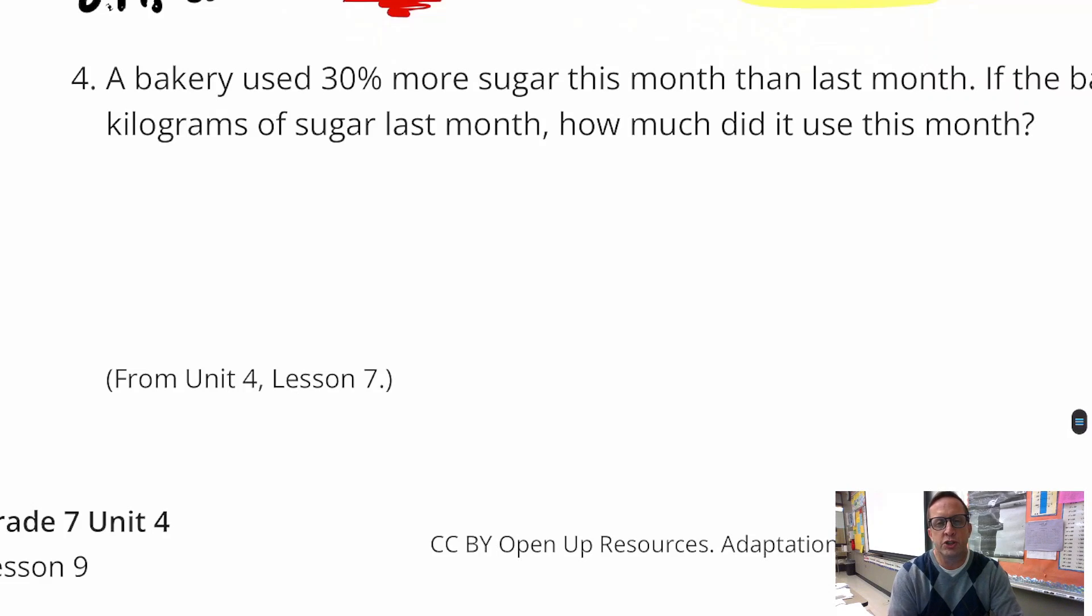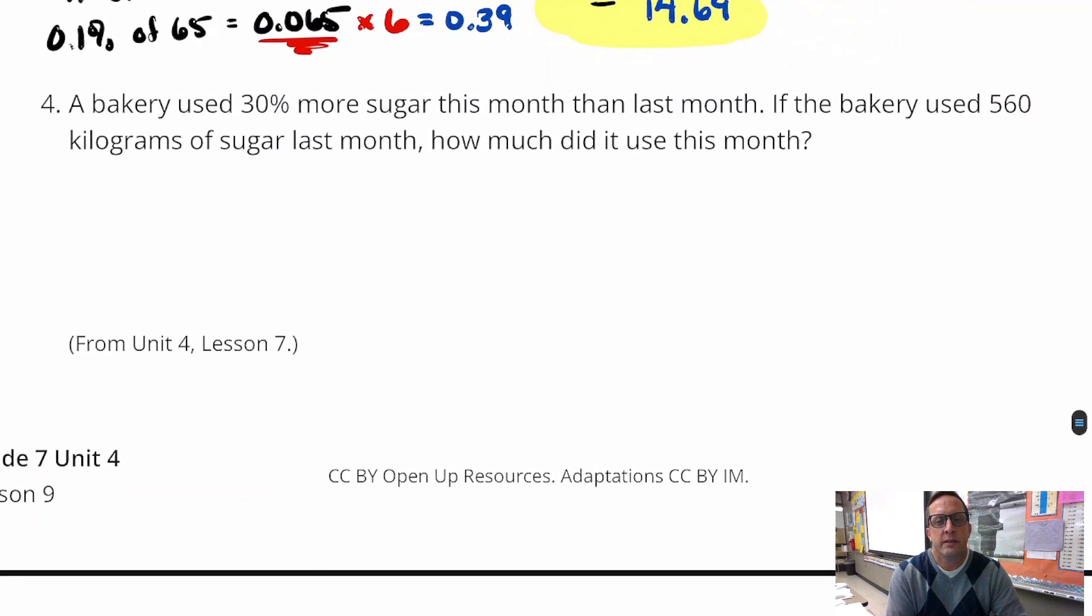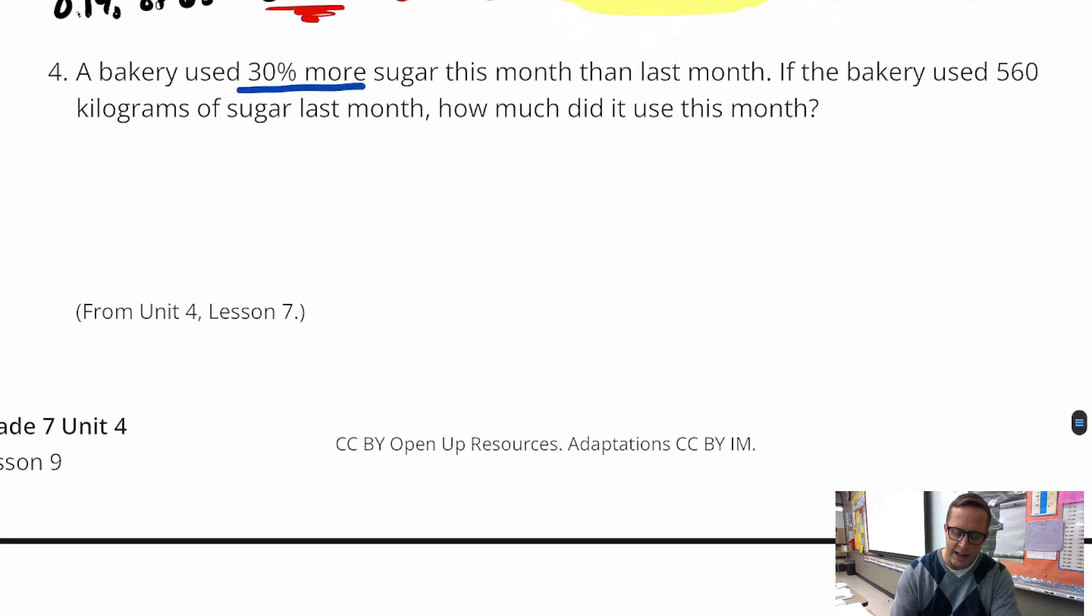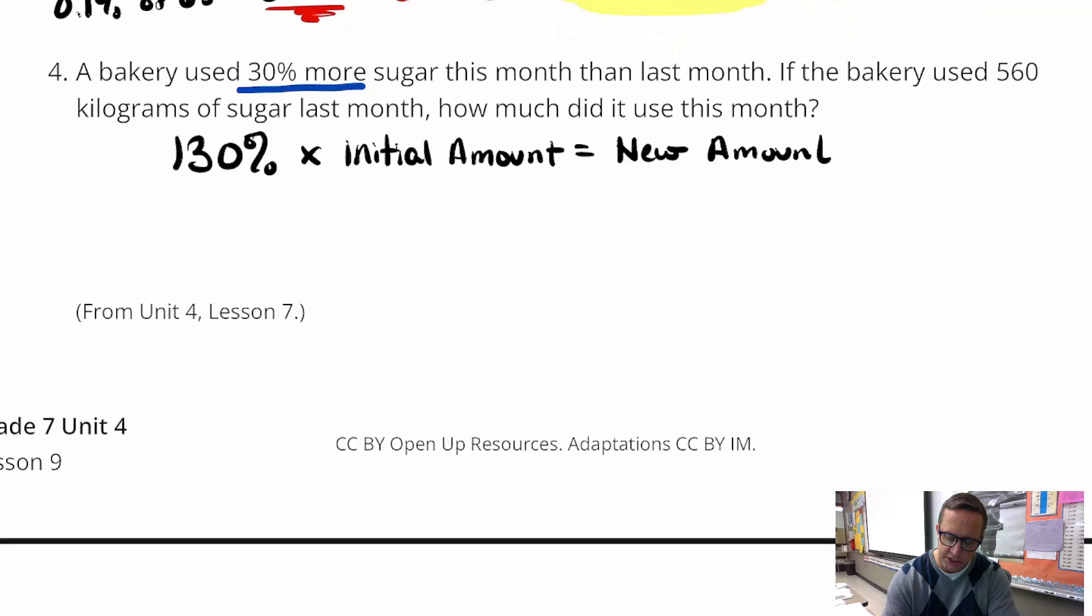Number four, a bakery used 30% more sugar this month than last month. If the bakery used 560 kilograms of sugar last month, how much did it use this month? This is a percent of increase, so we're going to add that to 100%. So that's going to be 130%, 130% times the initial amount, and that is going to equal the new amount. So we're going to do 1.3 times 560. And that equals 728.